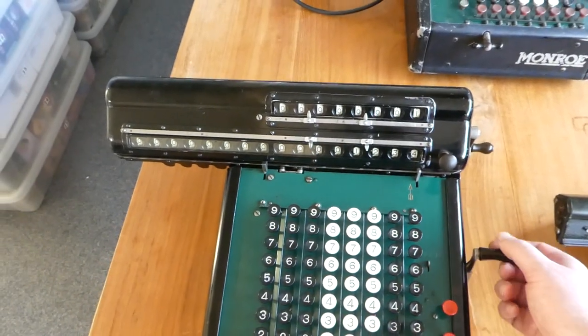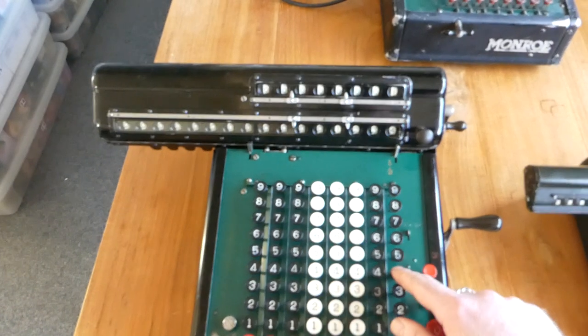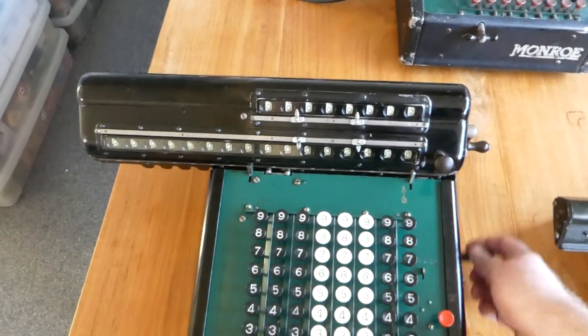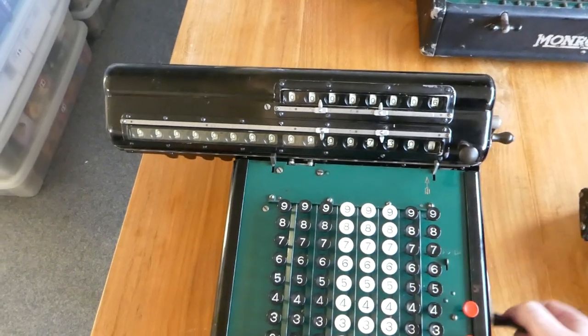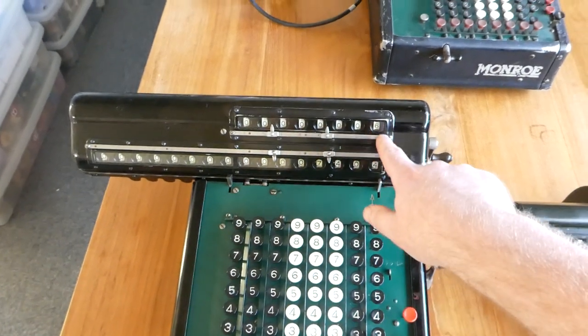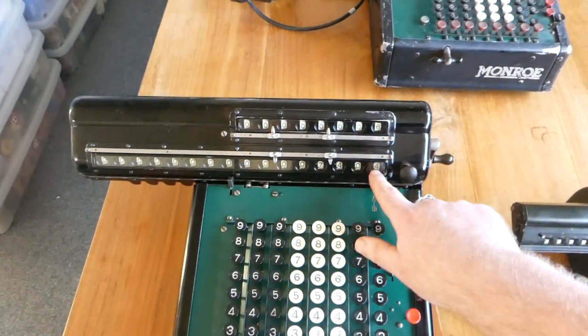And now the keyboard won't be cleared automatically. So if I enter a number, I turn the crank, the number remains here. So I can turn a few times in succession. So I've now multiplied this number by six, and the result is here.